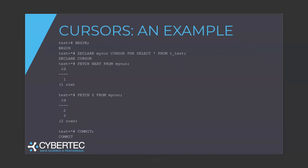A cursor basically lives inside a transaction. So if you're using a standard cursor, make sure that you start a transaction. We do BEGIN, and then we do DECLARE cursor FOR SELECT. What we're planning to do here is to take the content of this test table and fetch it in pieces. We declare the cursor — 'cursor' as a name — and then we can do FETCH NEXT FROM mycur, and it's going to produce one row.